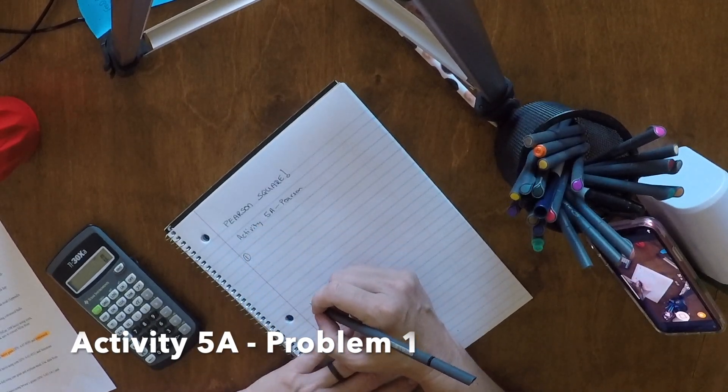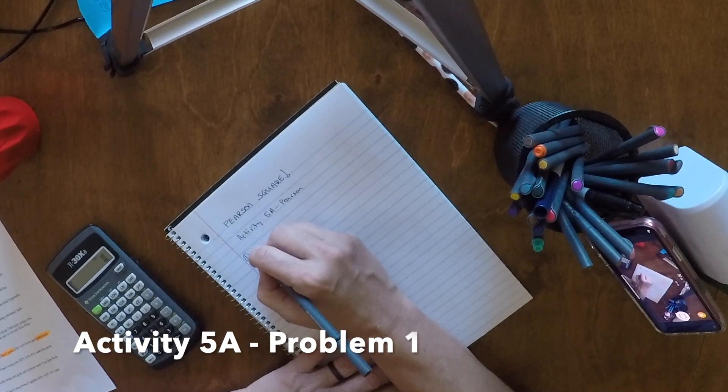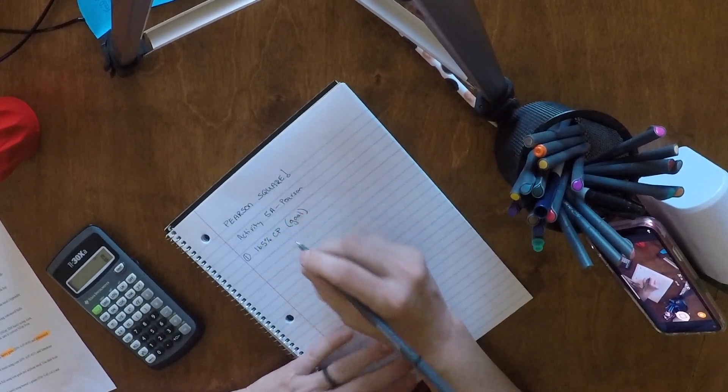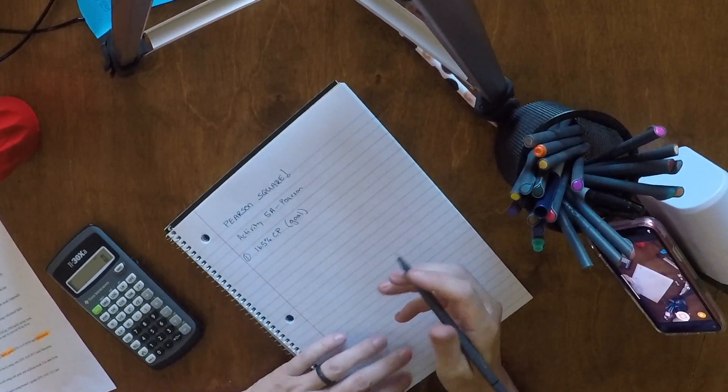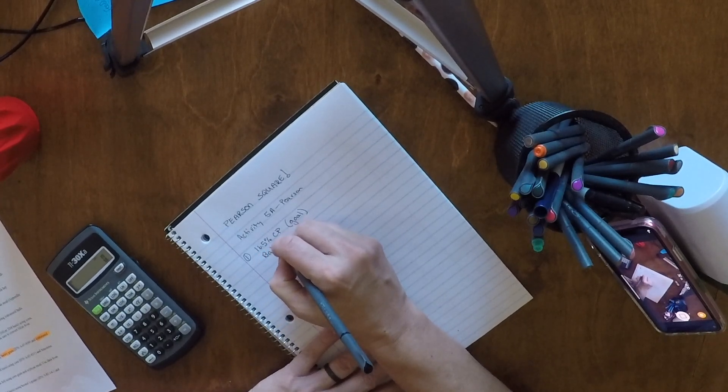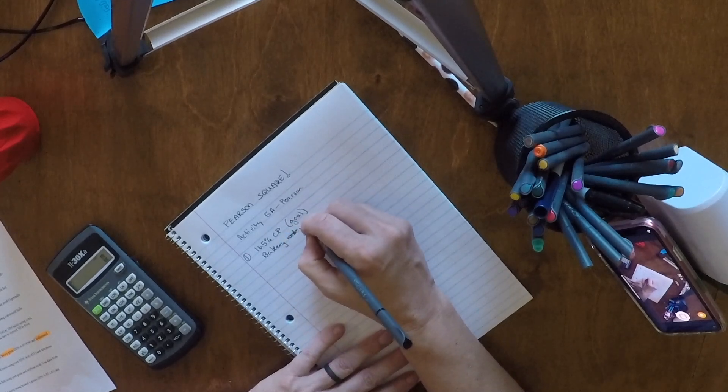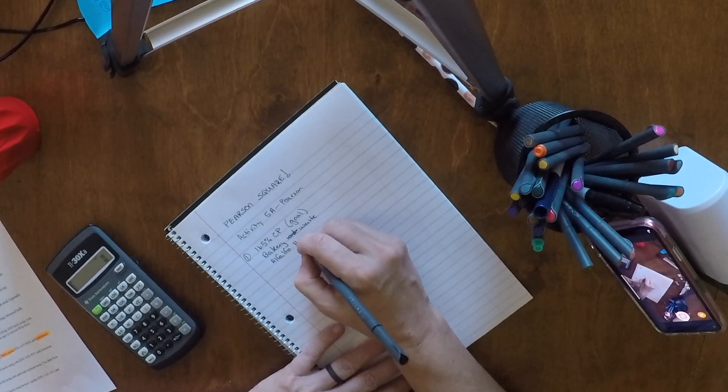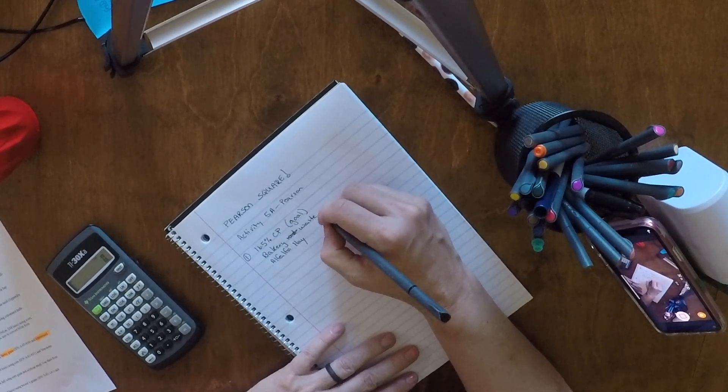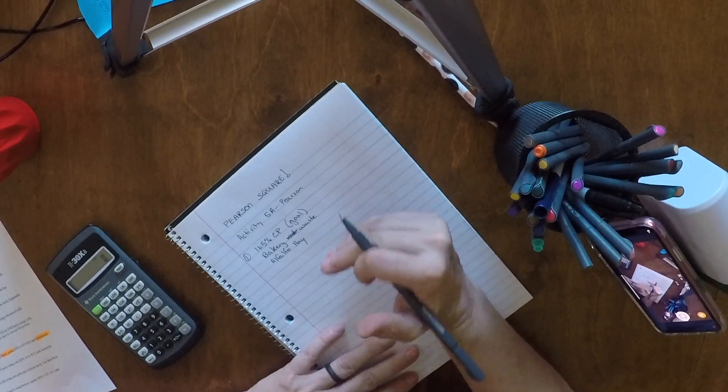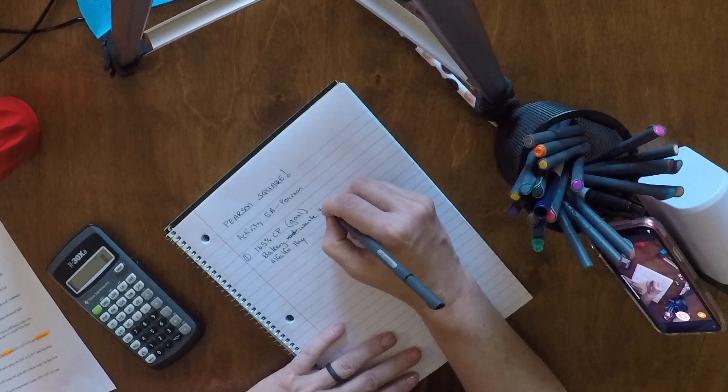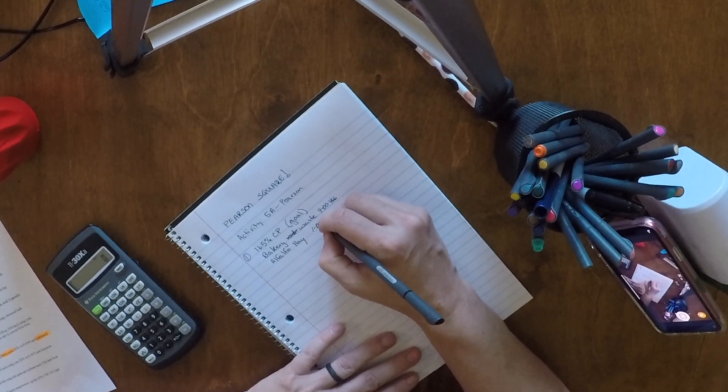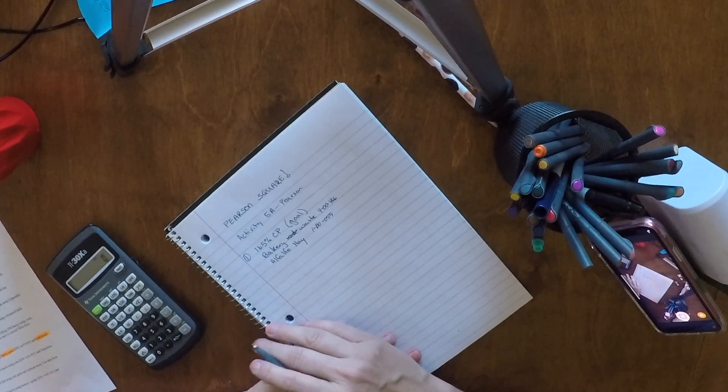Problem one is talking about balancing a ration that has a requirement of 16.5% crude protein. So this is our goal. That's what we're wanting to solve for. We have two feeds available to us: Bakery Waste and Alfalfa Hay. I do put the IFN, or International Feed Numbers, on the activity so that you can tell exactly which feed and verify that you have the correct feed. So 4-4-0-0. Because sometimes, especially with Alfalfa, there is a lot of choices, and so we need to make sure we have the right one.